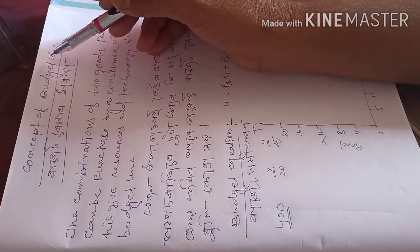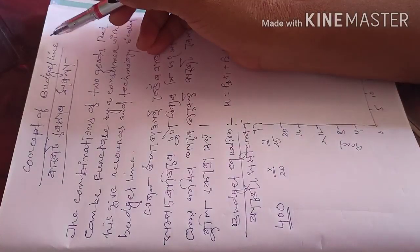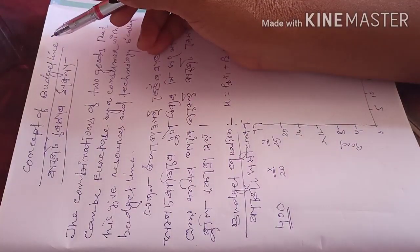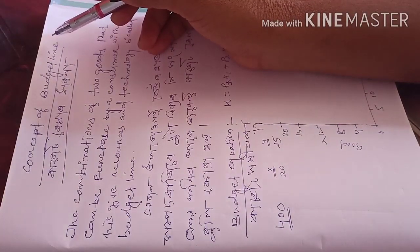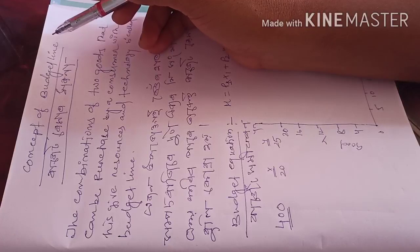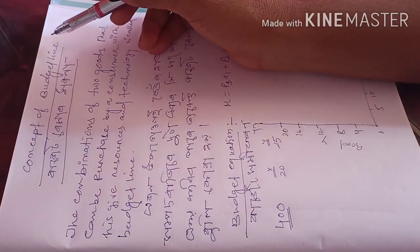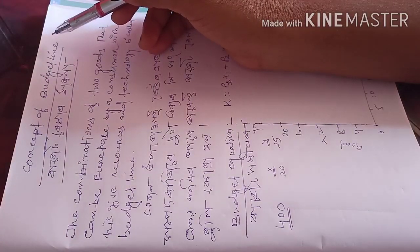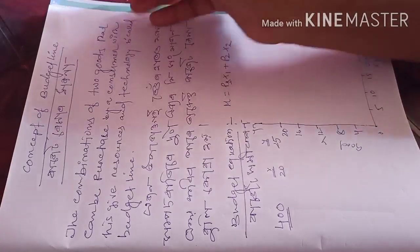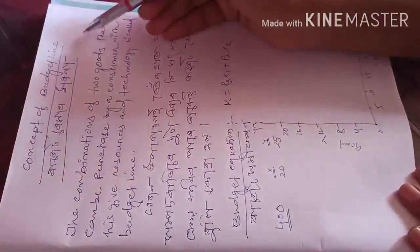Generally, budget means what? Budget means the amount that we can spend from our side — the money we can spend.